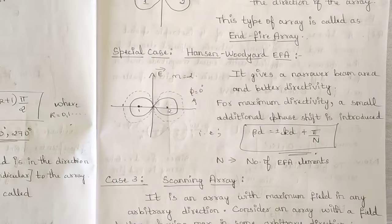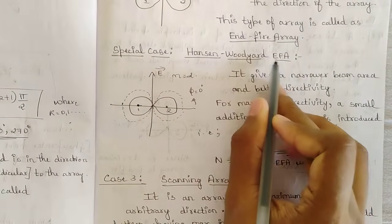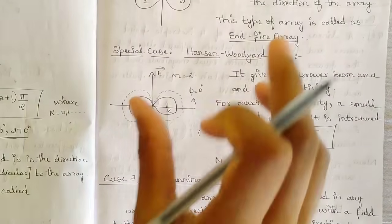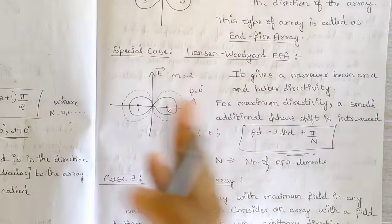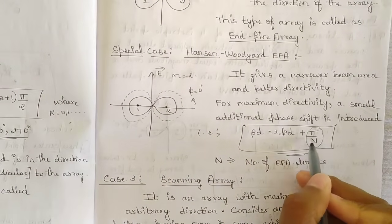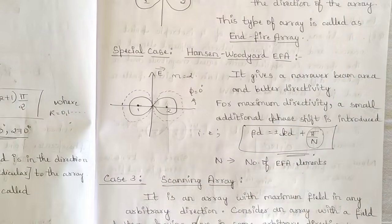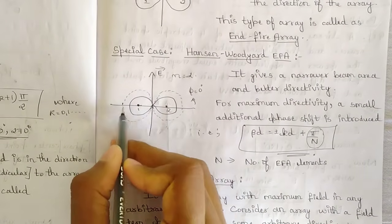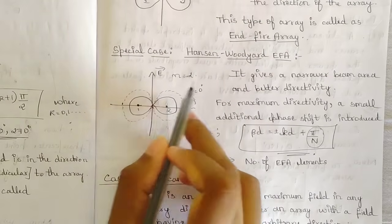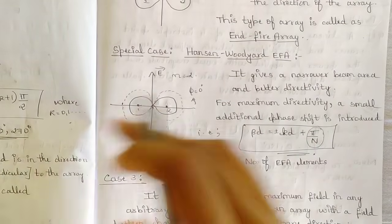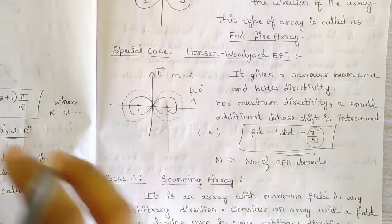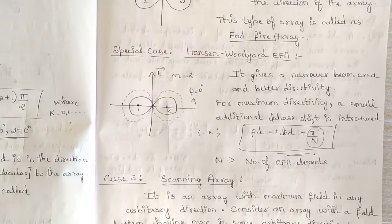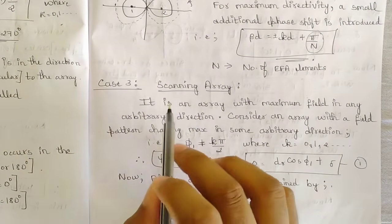Within the end fire array category, there is a special case called the Hansen-Woodyard end fire array. It is the same as the standard end fire array, but it provides a narrower beam area and better directivity. The beam varies by a factor of π/n, where n is the number of elements. The pattern remains the same but the beam area is extended, which also improves directivity. This is the Hansen-Woodyard end fire array.